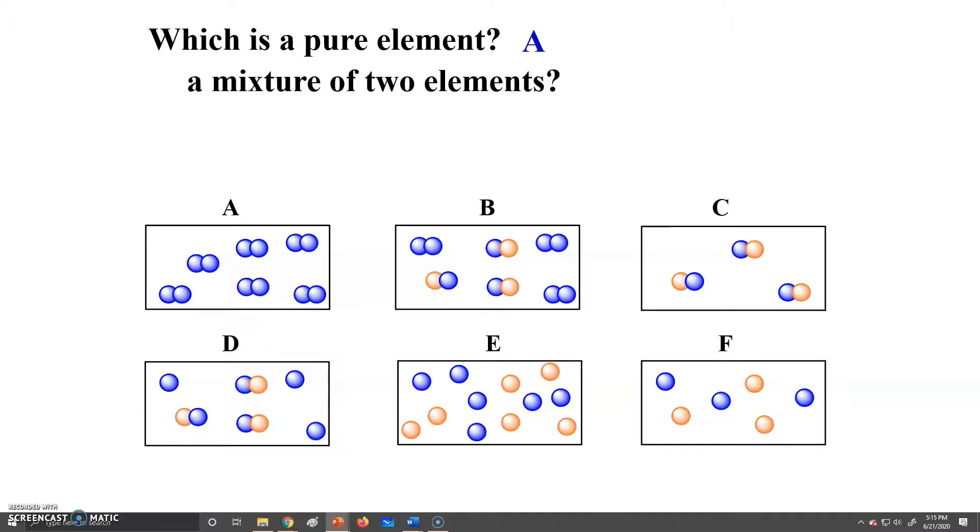If we wanted to look at a mixture of two elements, we want to look and see where you have two separate elements but not compounds, and that would be E and F. We can see they have spheres of two different colors there, but they're not bonded together. So we consider that a mixture of two elements and not a compound, because remember, they have to be chemically bonded together to be a compound.